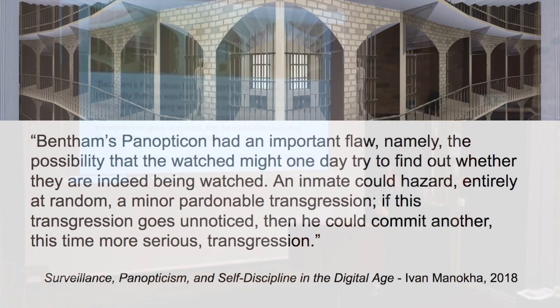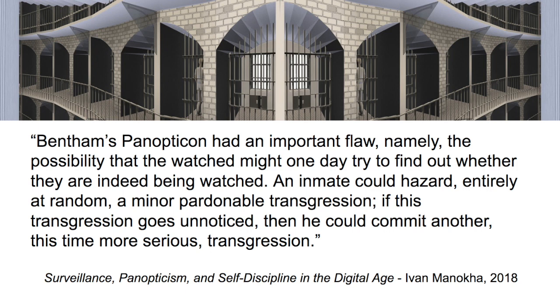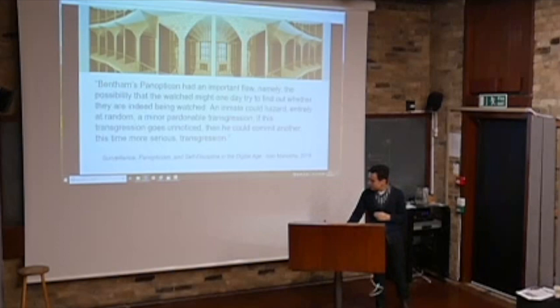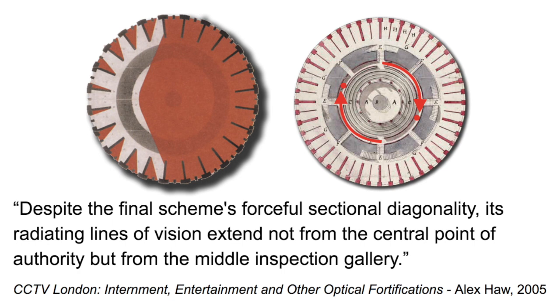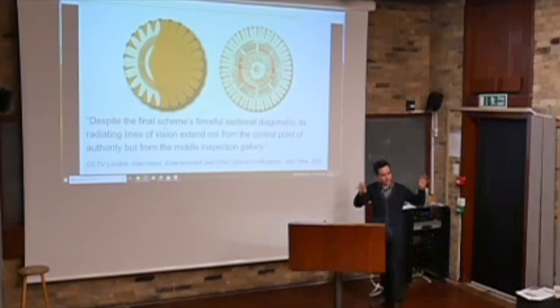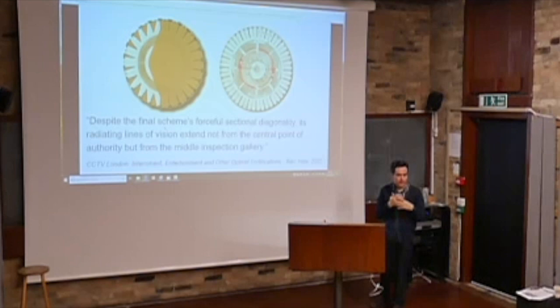Bentham's Panopticon, whether he realized it or not, had an important flaw: the possibility that the watched might one day try to find out whether they are indeed being watched. An inmate could hazard, entirely at random, a minor pardonable transgression. If that transgression goes unnoticed, they could commit another, more serious one. Here we see from the guard's point of view that a single guard does not see into all the cells at once — only a few at a time because of the corridors — and must walk circles around the space to continually survey. So there are multiple silos of vision, not a single central point of view. Google collects information about you; the NSA collects information about you — but they may or may not be in communication with each other.